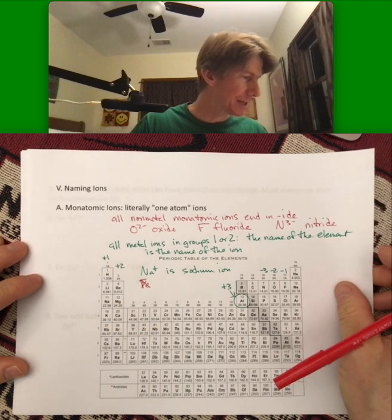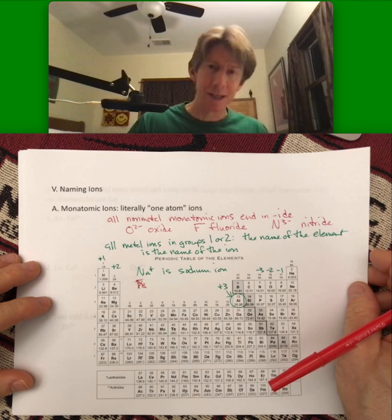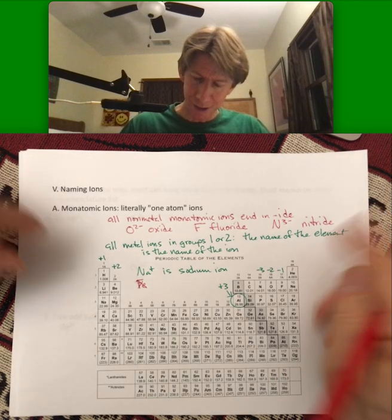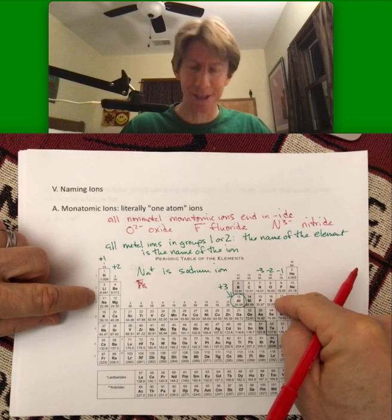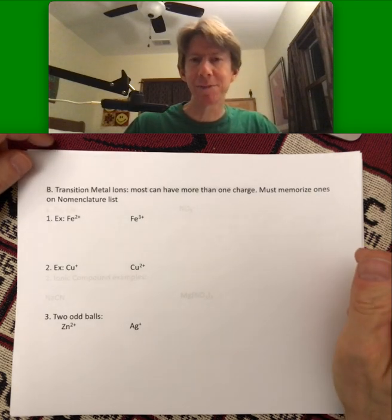And the -ide ending is a clue that you have a monatomic ion. Let's see, what else do we have to say for this one? I think that's it. So there's no substitute for memorizing your ion list, but there are some clues as to where they are on the periodic table. Now, transition metal ions.